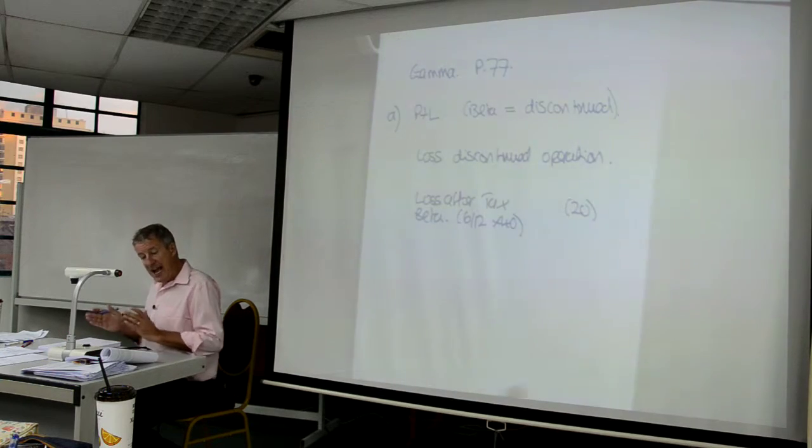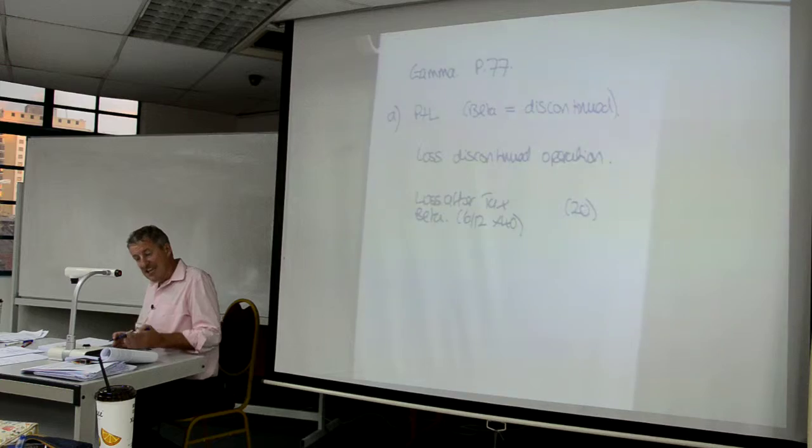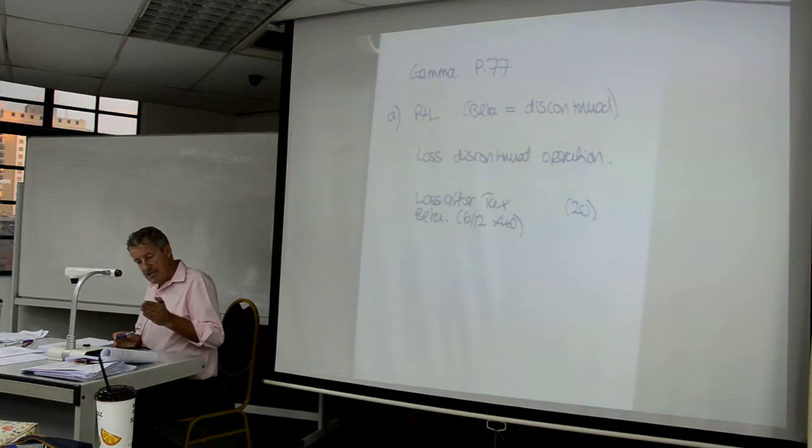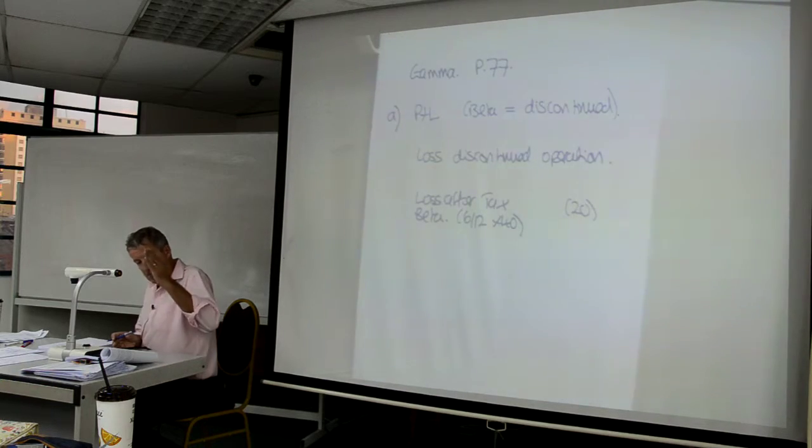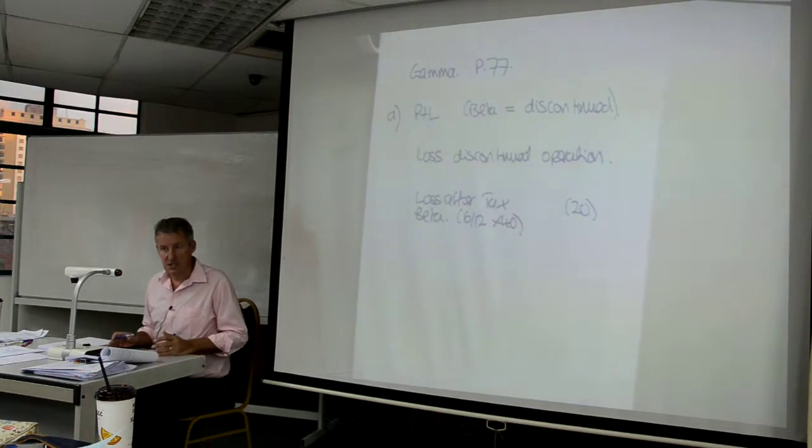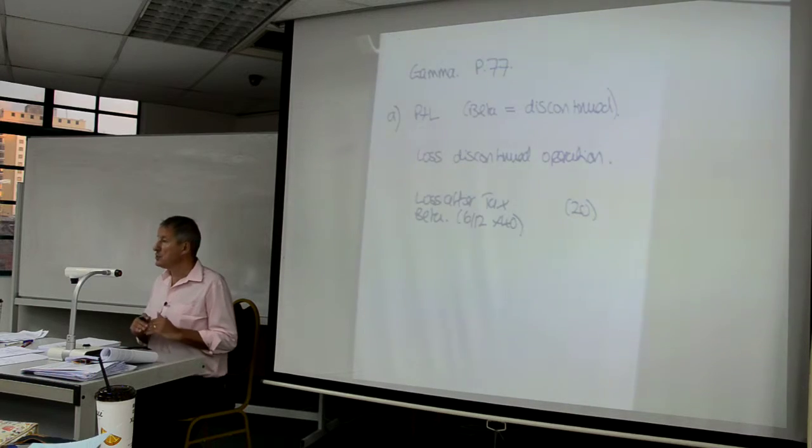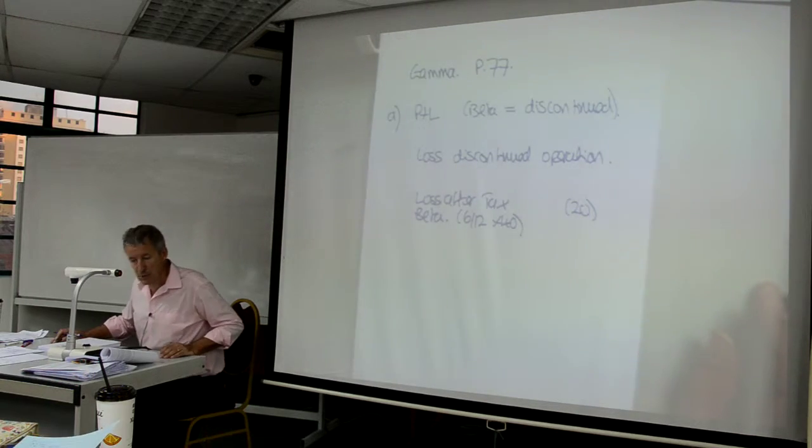So we have consolidated in the group accounts six months of Beta. Six months of her turnover, six months of her distribution, six months of her admin, six months of her tax, six months of her losses. So as her loss overall was 40, I just want to bring in that one figure of 20.